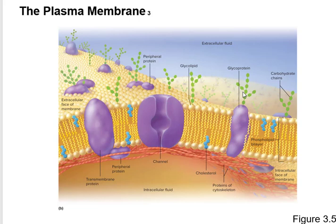Glycoproteins identify you as you — the glycoproteins on you won't be the same as the glycoproteins on me. That's important for organ transplants: if I need a kidney and you donate one, if we don't match up, my body will recognize it as foreign and destroy it. You need as much of this outer surface material matching between donor and recipient. If you haven't already, you should sign your driver's license as an organ donor.